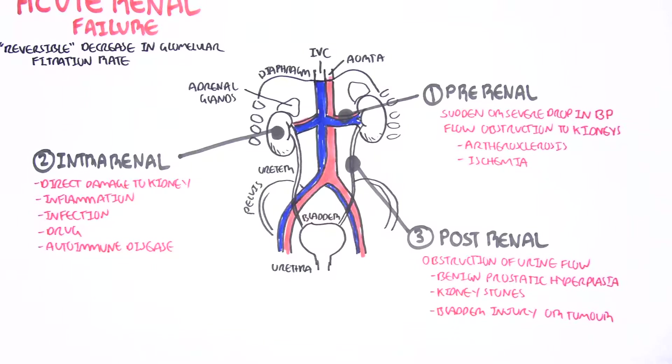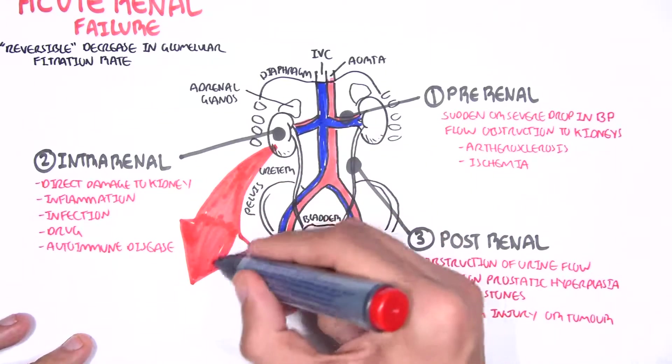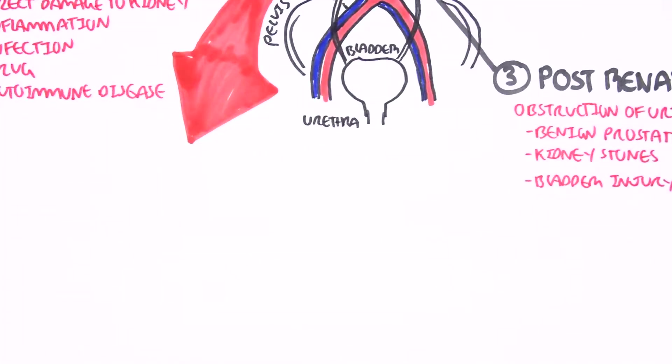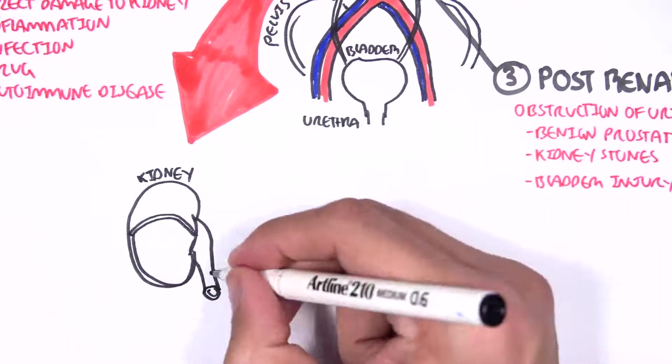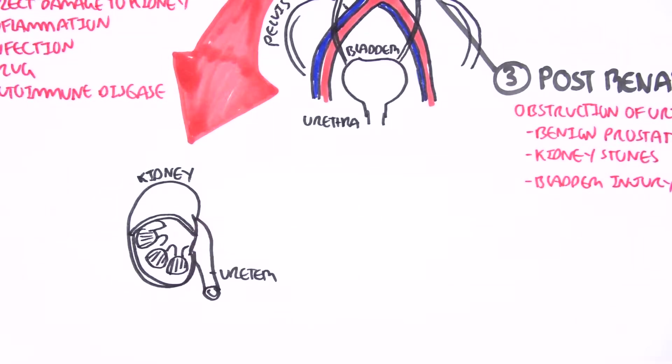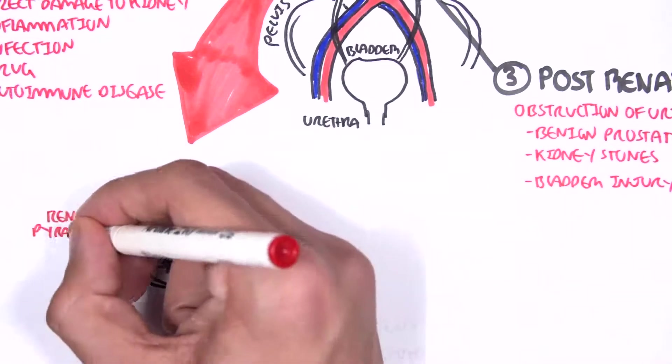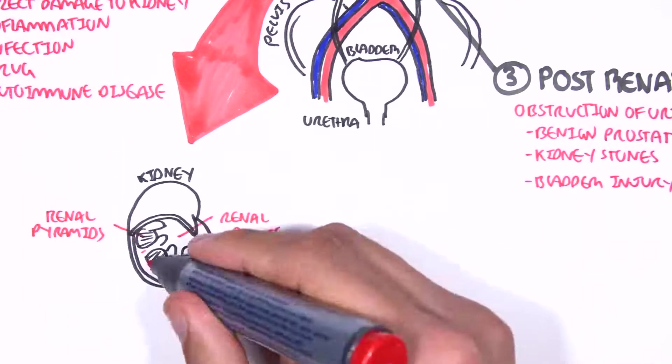Before we look into that, we should quickly brush over the anatomy. Here I'm drawing the right kidney, the ureter, the renal pelvis, the renal pyramids within the renal medulla. Around this area are the functional units of the kidneys, which are called nephrons. Let's zoom into one of these nephrons.